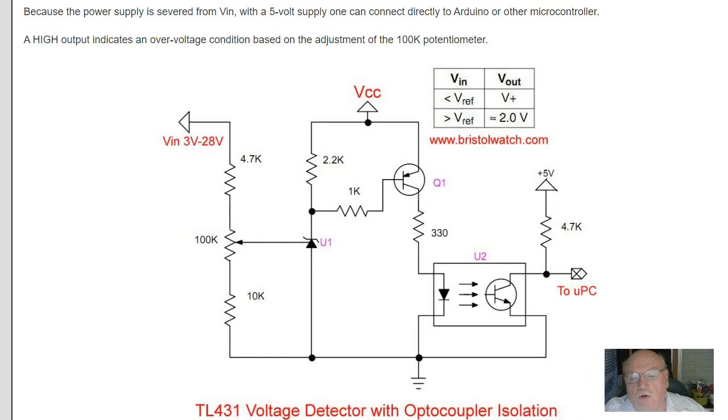Alright, here's another variation of the previous circuit, but this time I've added an optocoupler instead of an LED. I'm using a 330 ohm resistor and everything operates as before. Now, this gives me voltage and noise isolation from the voltage detector circuit. And I can connect the output to an Arduino or other microcontroller.